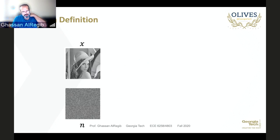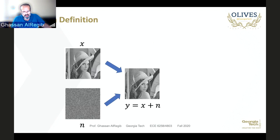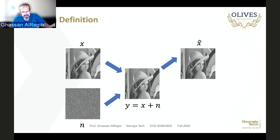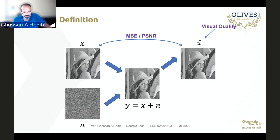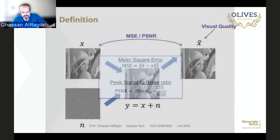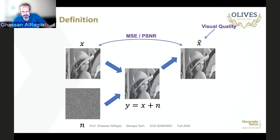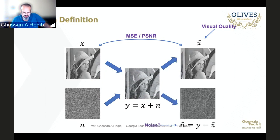We can define the problem as follows: you have a signal X (or image X) and some noise N. If this noise is additive, you add the corresponding noise component to every single pixel to get a noisy image Y. You then want to denoise the image to get X-hat, and there is an error between X-hat and X that you measure using MSE, PSNR, SSIM, or other algorithms. This becomes your optimization function — how much you are reducing that error.